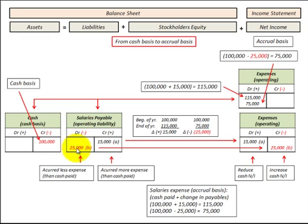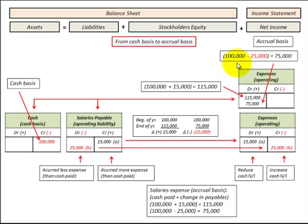If we had a decrease in salaries payable of $25,000 — a debit amount — and a credit of $100,000 for cash paid, we'd need a balancing entry for accrued expenses of $75,000: the $100,000 cash paid minus the $25,000 reduction in salaries payable.